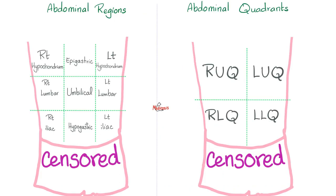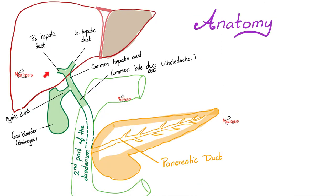Where is your liver and gallbladder? Right hypochondrium, right upper quadrant. Here's the right hepatic duct from the right lobe, the left hepatic duct from the left lobe — they join together and form the common hepatic duct.